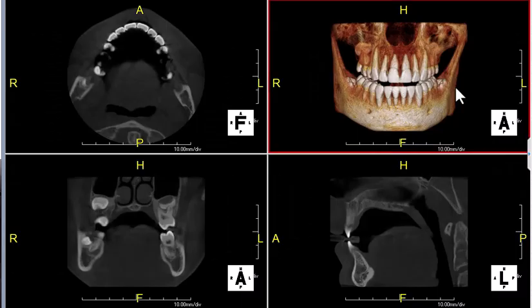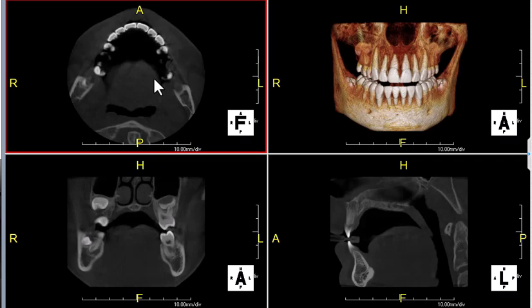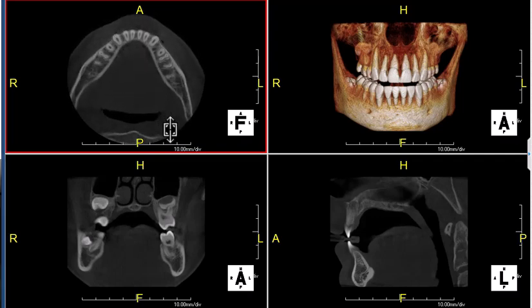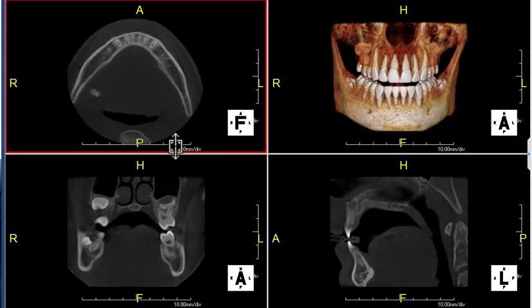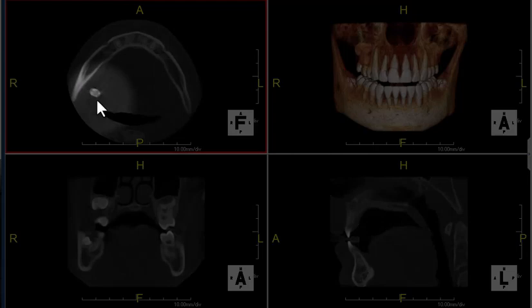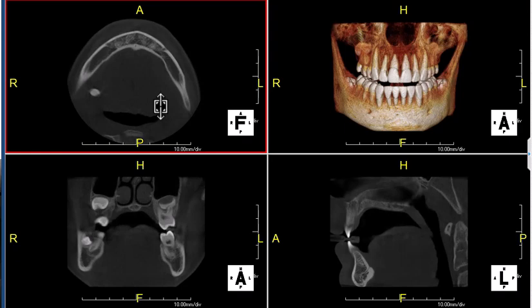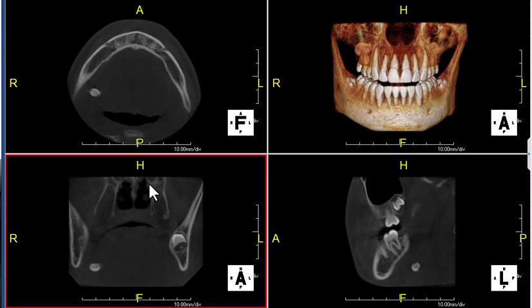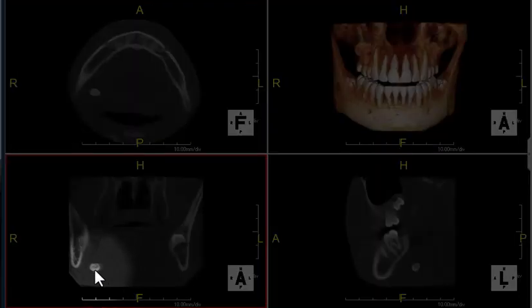Now we're turning to the slices on the three-dimensional CBCT. The first one I'm going to look at is this upper left-hand side here, and I'm just going to scroll down, looking to see where this radio opacity is. As you see, it clearly comes into view right here on the right-hand side — very distinctly. Anatomically, that is in the floor of the mouth, the submandibular gland — the body of the submandibular gland.